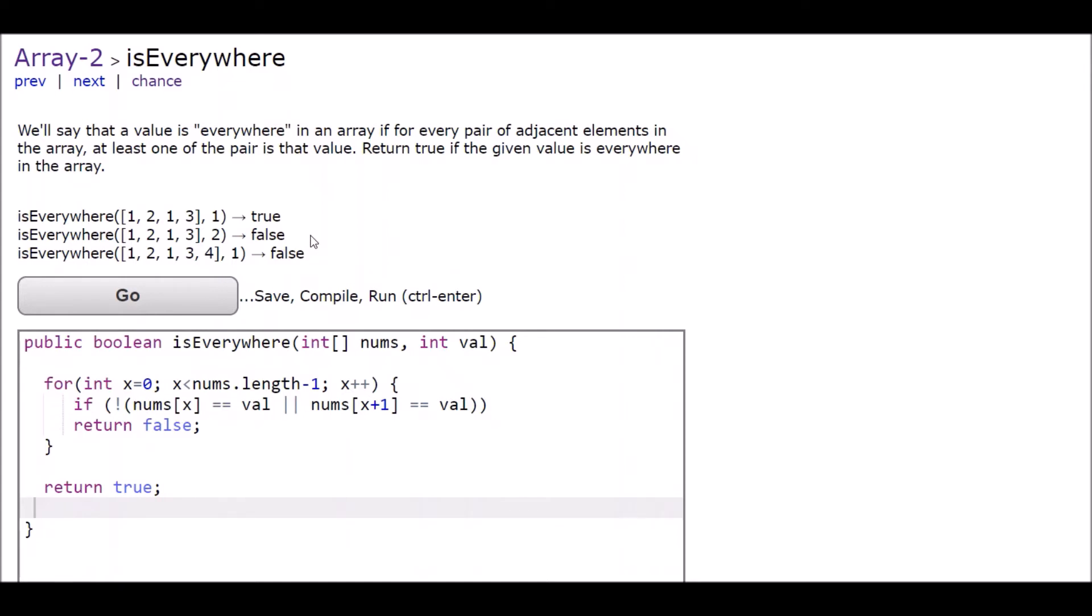So all I'm doing, and you can see my solution below here, all I'm doing is going through the entire array and checking to see if the value that's getting passed in is at position x in the array or at the next position, at position x plus one. And if it's not, right, if the value that I'm looking for is at x or x plus one, not, see that little not on the outside, I'm returning false right away.